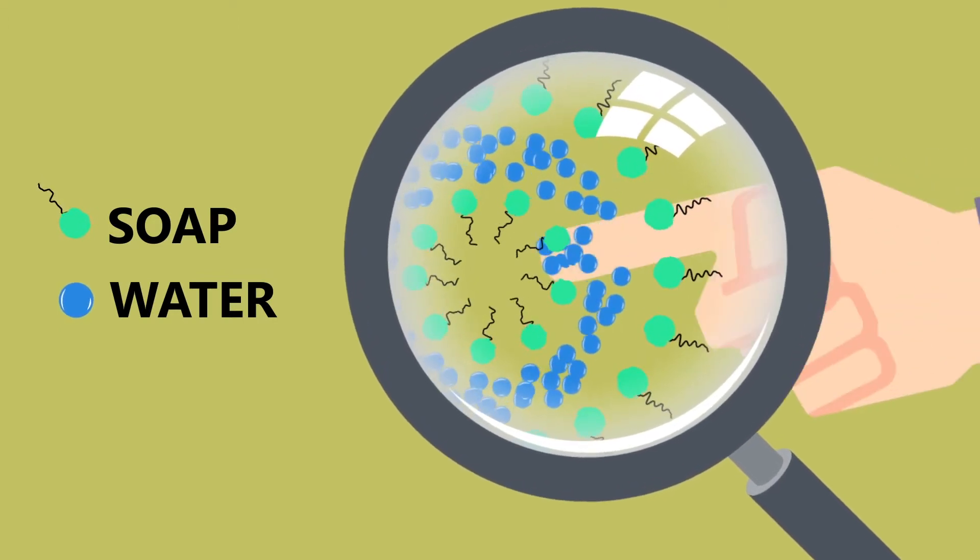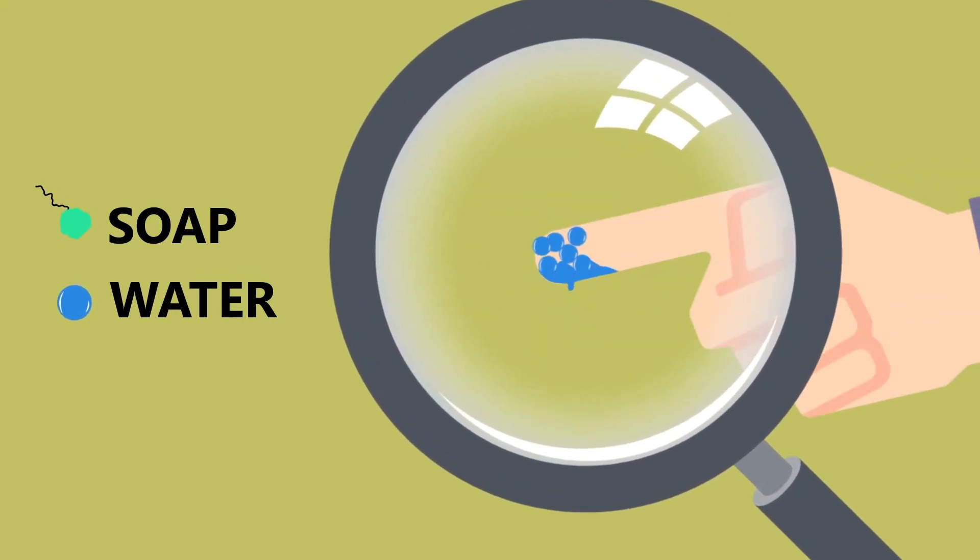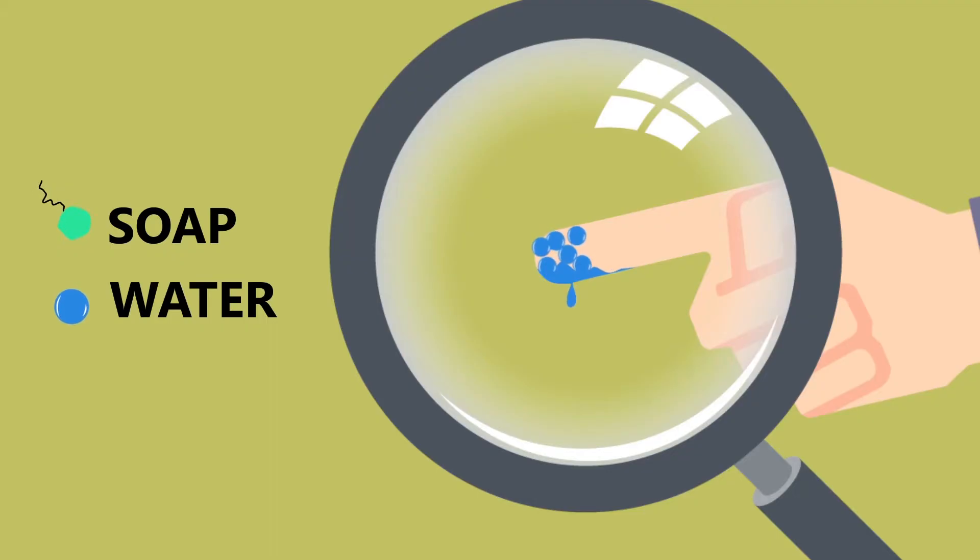So when you put your dry finger inside the bubble, it pops up because the water molecules are attracted to your dry skin and it breaks the surface tension.